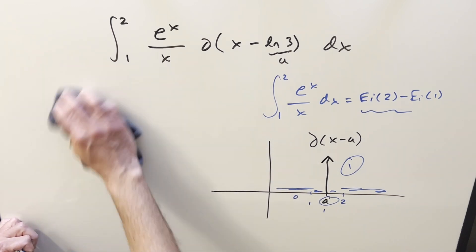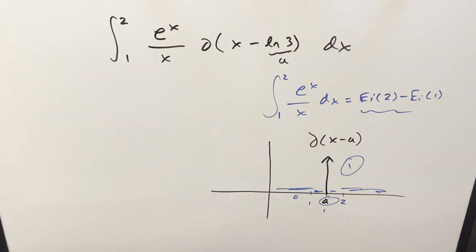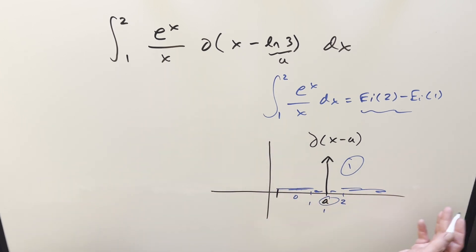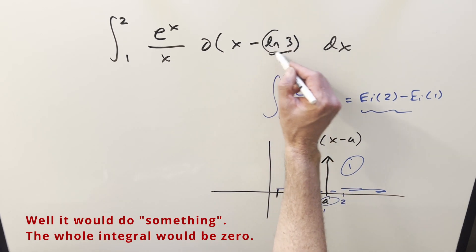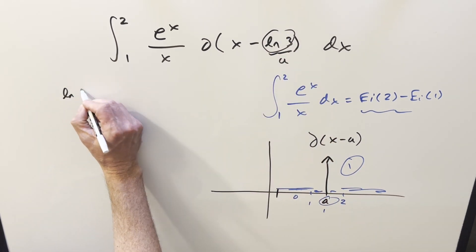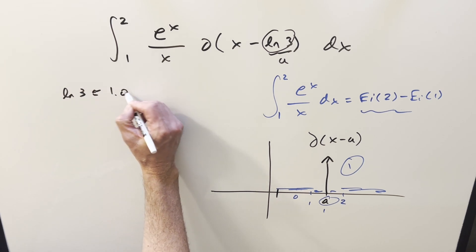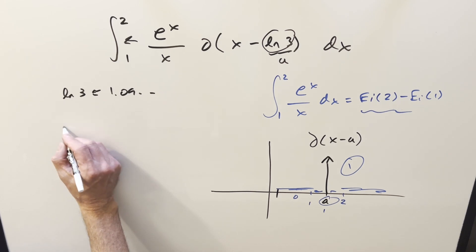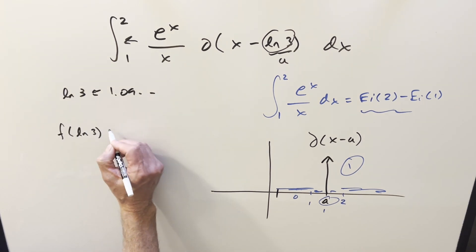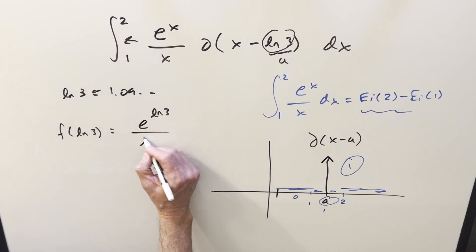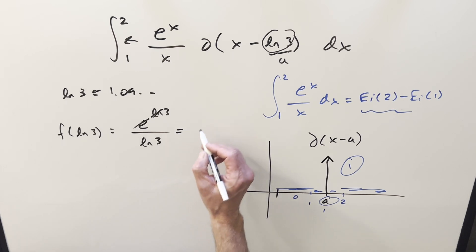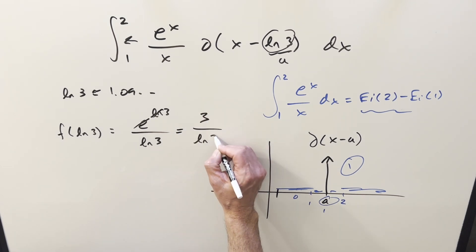The only thing to be careful about is what a is. If a were outside the bounds of our integral, the result would be zero. So the key question is: what is ln 3? Well, ln 3 is approximately 1.09, which is clearly within our bounds of 1 to 2, so we don't have to worry about that. All we need to do is evaluate at ln 3: f of ln 3 gives us e to the ln 3 over ln 3. But e to the ln 3 is just 3, so the final answer is 3 over ln 3.